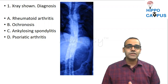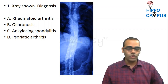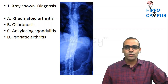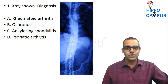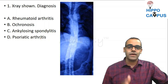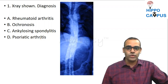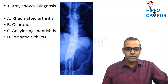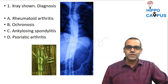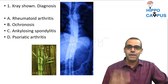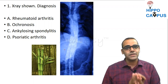The options were: rheumatoid arthritis, ochronosis, ankylosing spondylitis, or psoriatic arthritis. Focus on the X-ray — it is of the dorsal lumbar spine, AP (anteroposterior) view. You can see clearly there is calcification in the vertebrae with multiple syndesmophytes, giving a picture of bamboo spine.